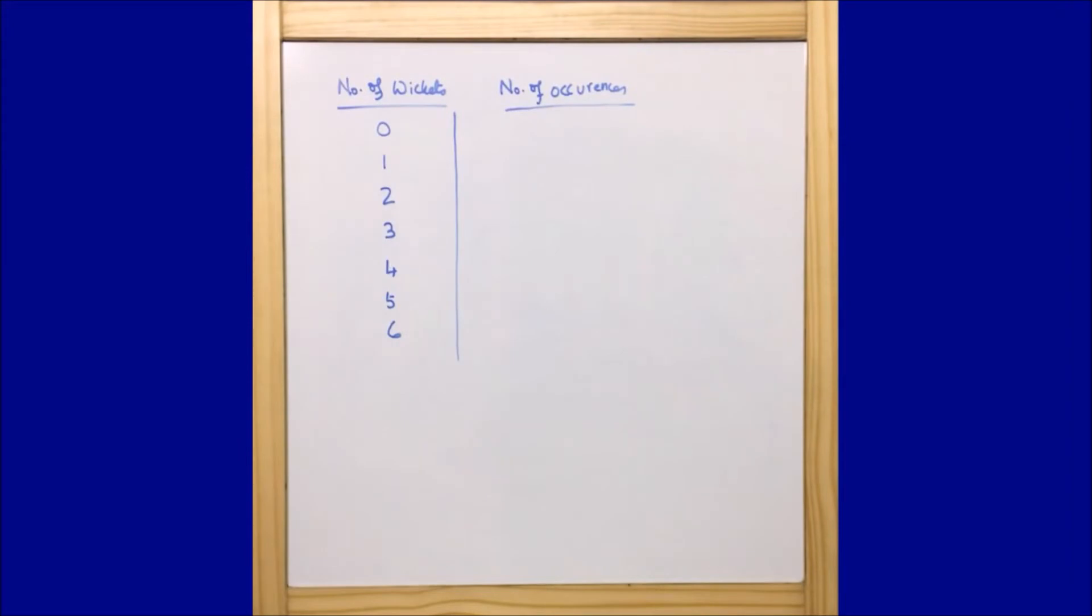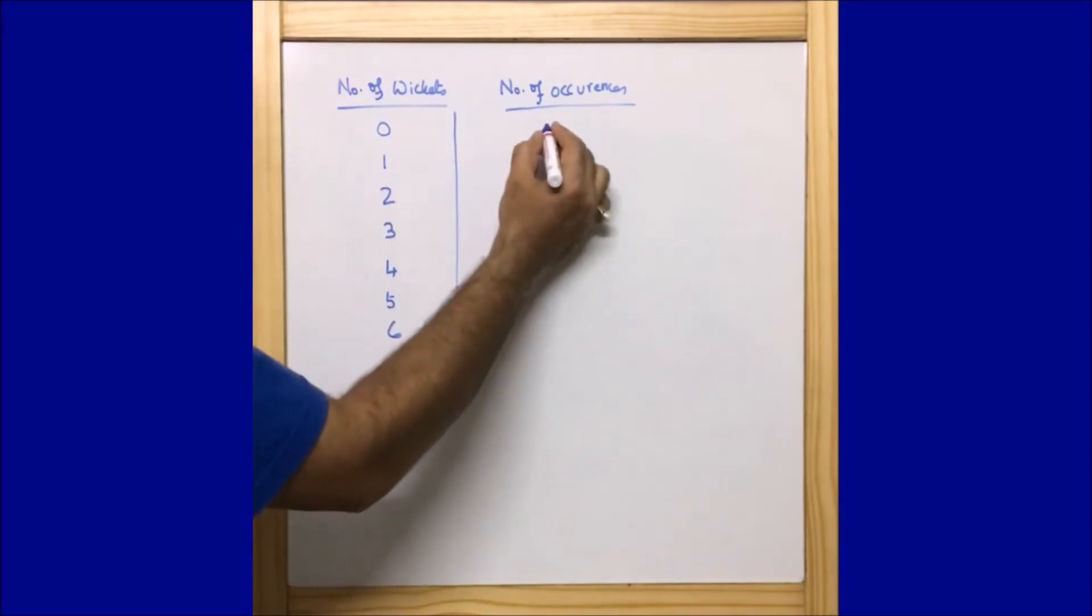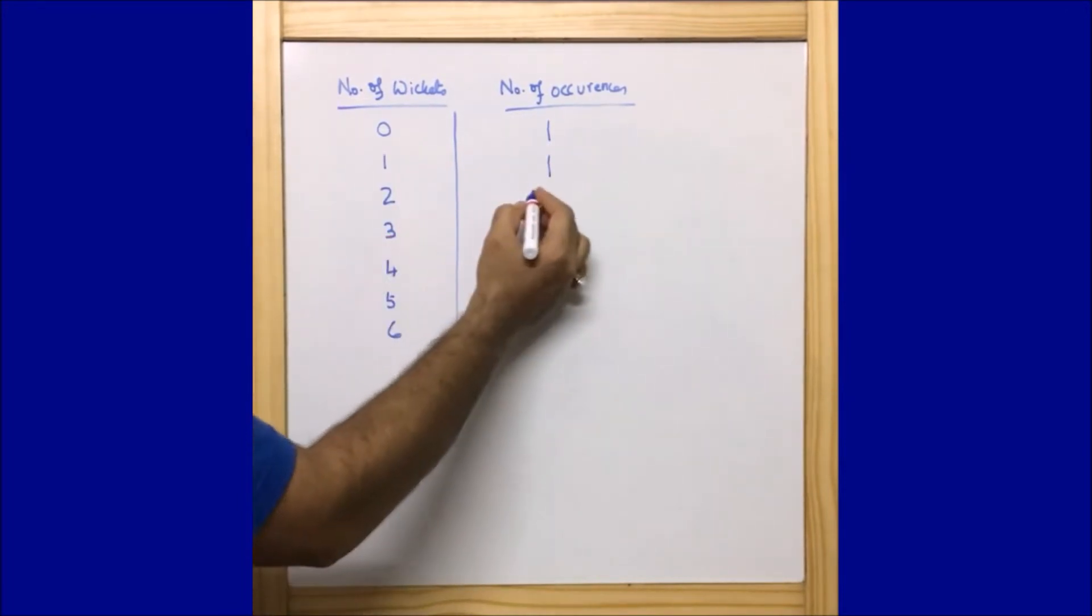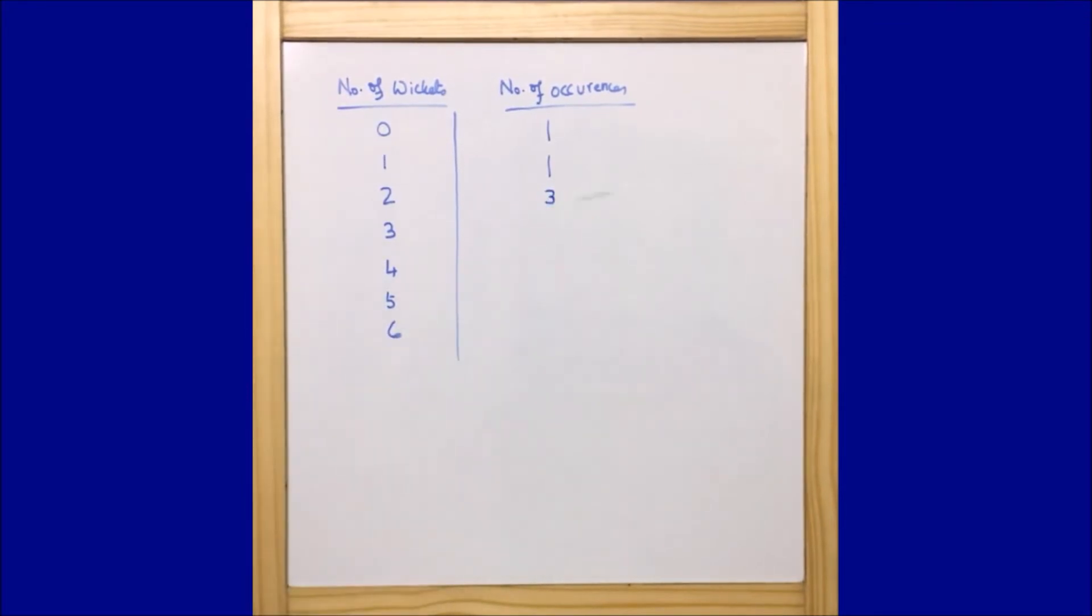Now let us see. Zero comes only once, so I can write one. One wicket comes also once, so I can write one. Against two, we are getting three because three times two is there in this data.